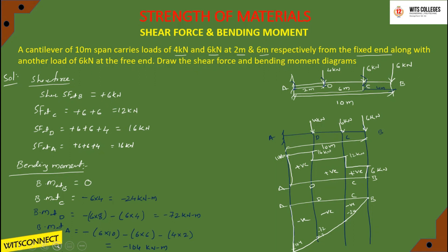In the next class we will discuss a cantilever beam with uniformly distributed load, as well as a cantilever beam with both UDL and point loads. For a cantilever beam with only point loads, the bending moment diagram is an inclined straight line — a triangular shape — with no parabola.